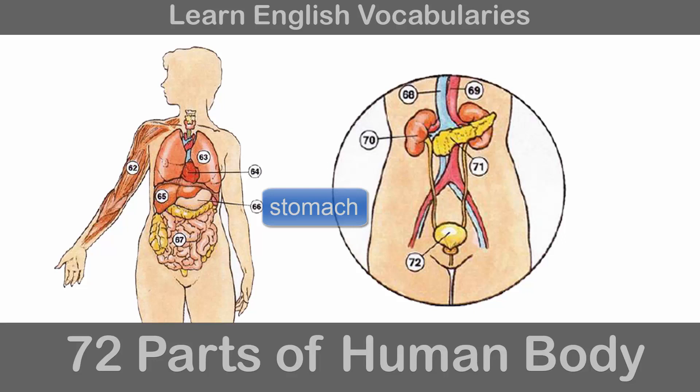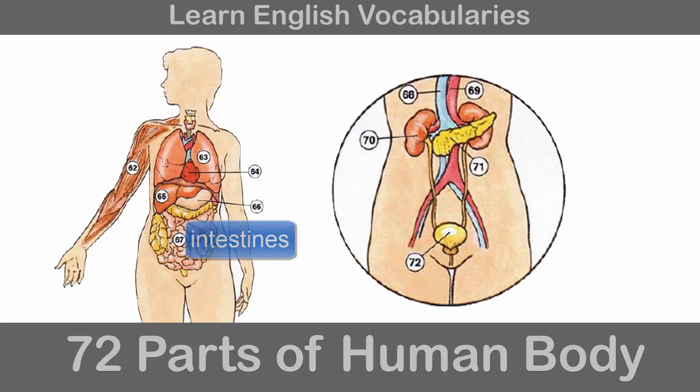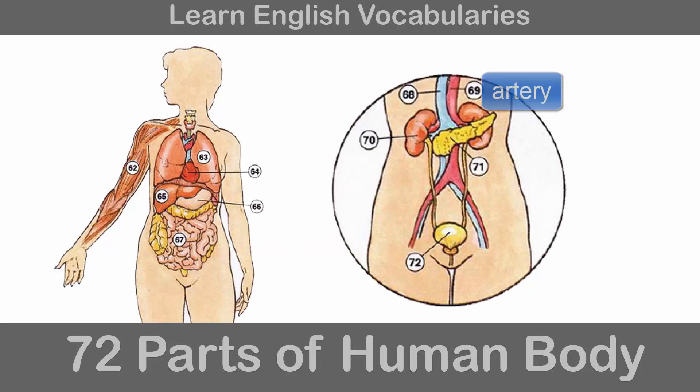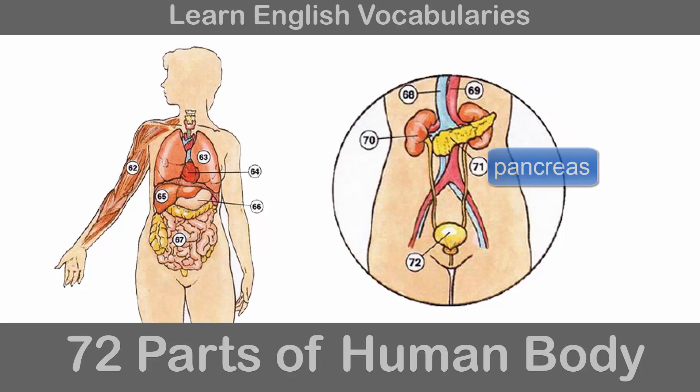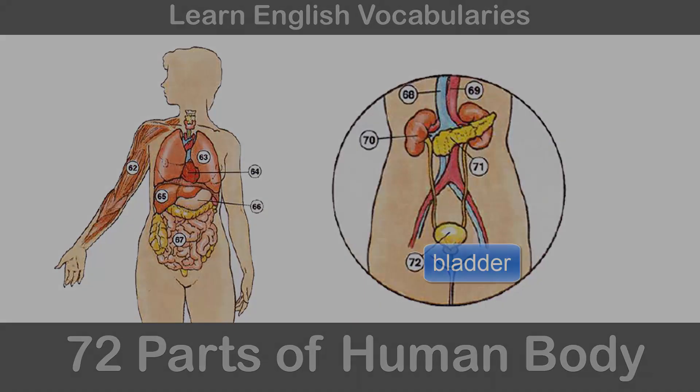Liver 66. Stomach 67. Intestines 68. Vein 69. Artery 70. Kidney 71. Pancreas 72. Bladder.